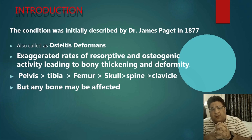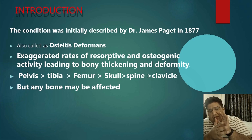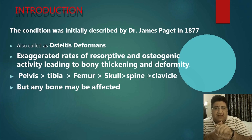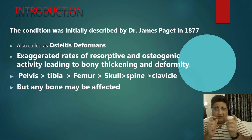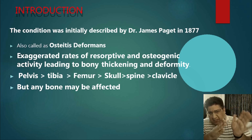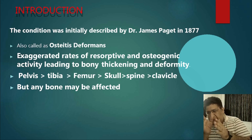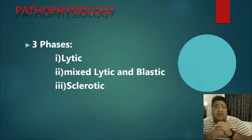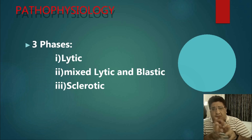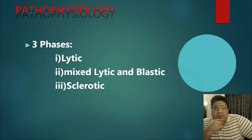The most common bone involved is always the pelvis — the central skeleton is usually preferred. Pelvis is followed by tibia, then femur, then skull. The disease is divided into three phases: too much resorption is the lytic phase, too much formation is the plastic or sclerotic phase, and the third is a combined mixed picture.